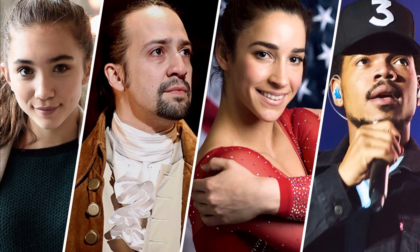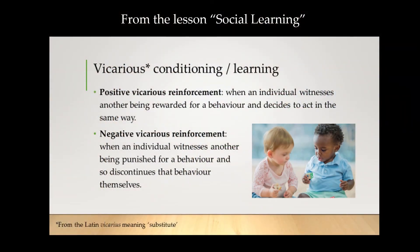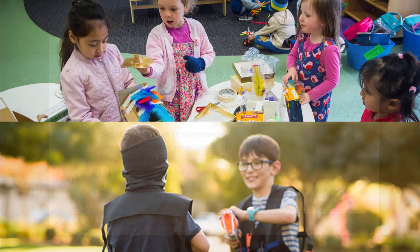Another way that gender roles can be formed via social learning is vicariously — that is, when we observe someone else get rewarded or punished for a behavior. For example, a young girl may witness her older sister being told how pretty she looks in a dress, or being told that she shouldn't want to play footy. And she learns that you get rewarded for being pretty and punished for showing stereotypically male behavior.